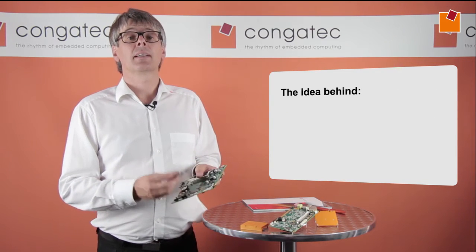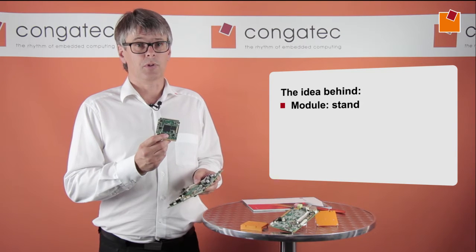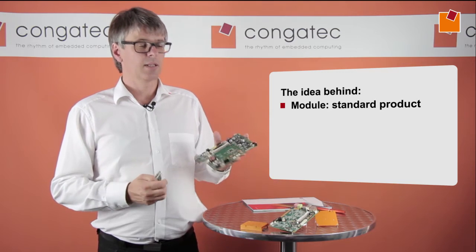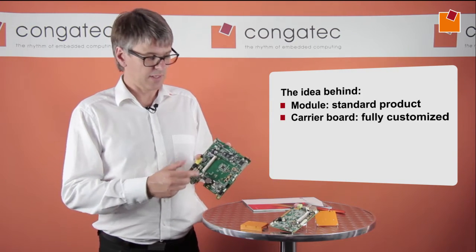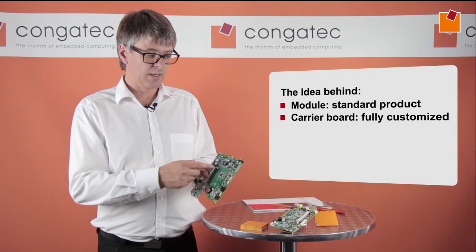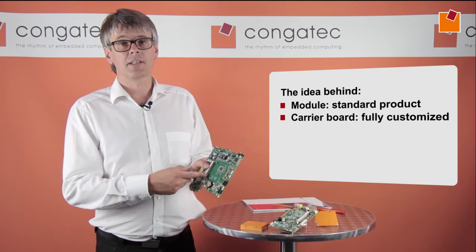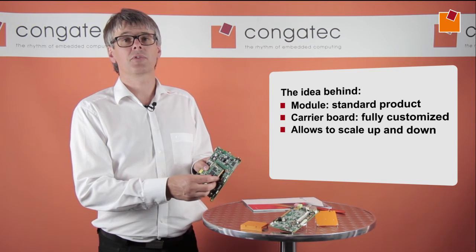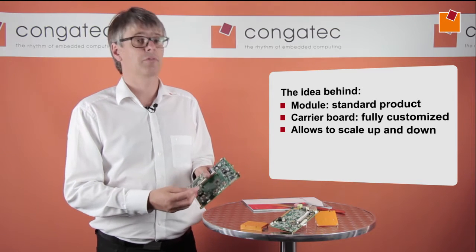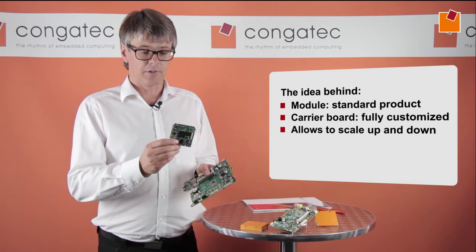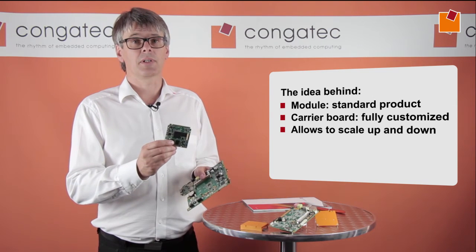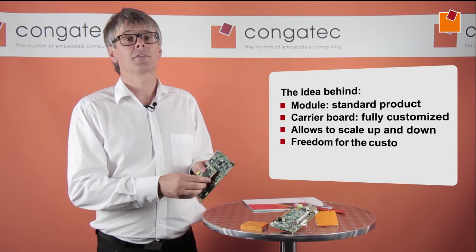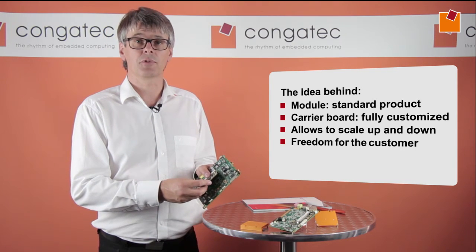The module is a standard product, which is produced, developed, and sold to many different applications, while the carrier board is fully customized — as you can see here, an example from a customer. This standardized interface allows scaling up and down with different CPUs. You can even change between different architectures. Typically we have the Freescale i.MX6-based platform here, but x86-based modules may also plug in, allowing a lot of freedom for the customer to choose.